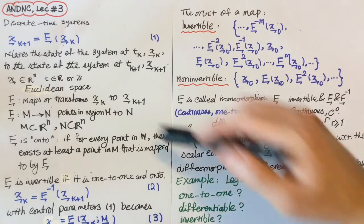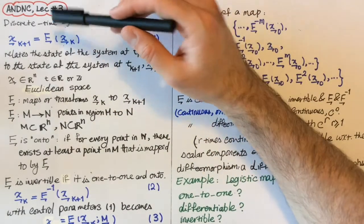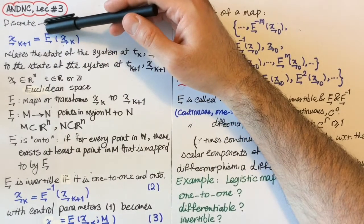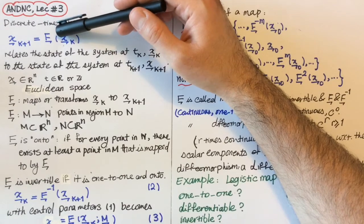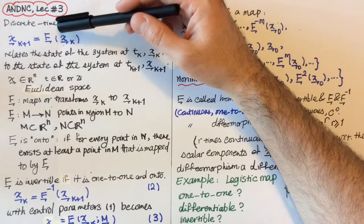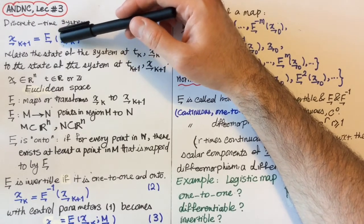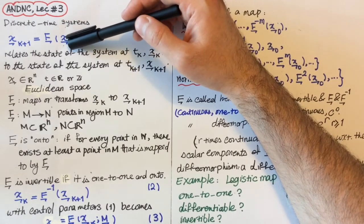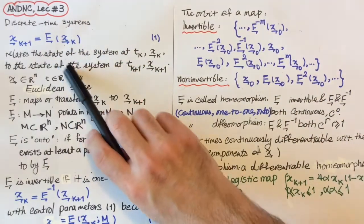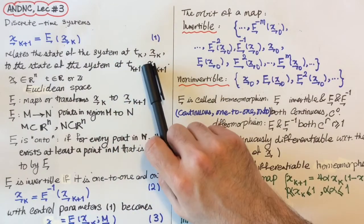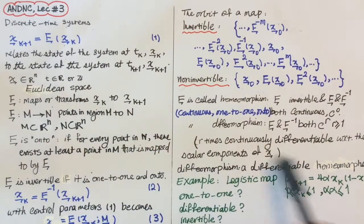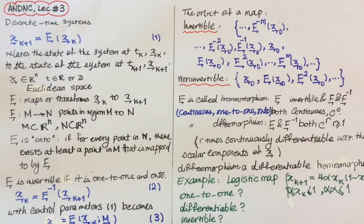We said that discrete time systems are shown in this form: x_k+1 equals f, which is our function, which applies to x_k and transforms x_k to x_k+1. Essentially, f relates the state of the system at t_k, which is x_k, to the state of the system at t_k+1, which is x_k+1.